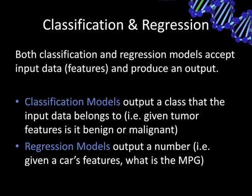There are two broad classifications for these machine learning models: classification models and regression models. Classification outputs a class that the input data belongs to — for example, whether a given tumor is benign or malignant. Regression models output a number; for instance, given a car's features, it might output the expected miles per gallon. Regression models are more like a mathematical function, outputting a number rather than a class.